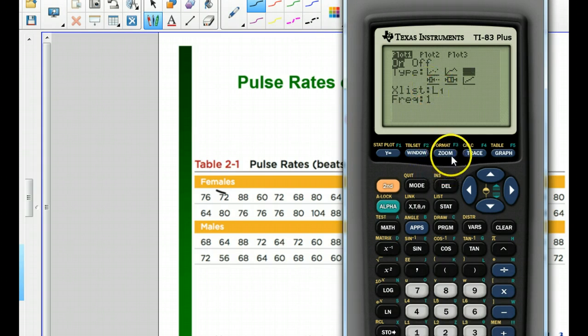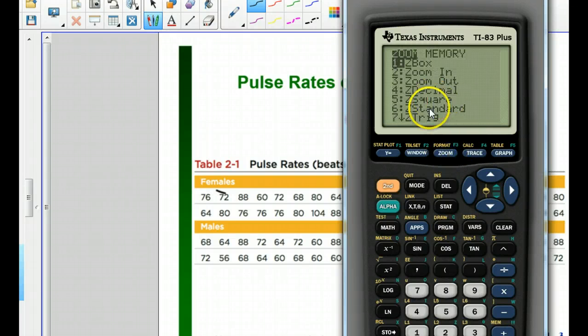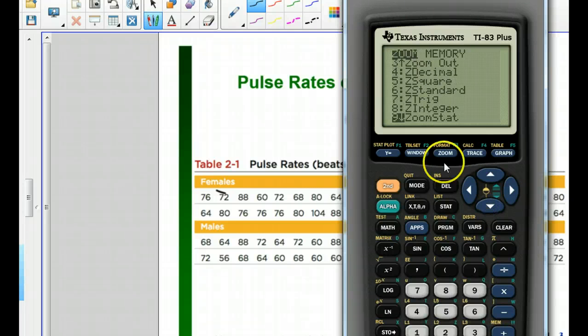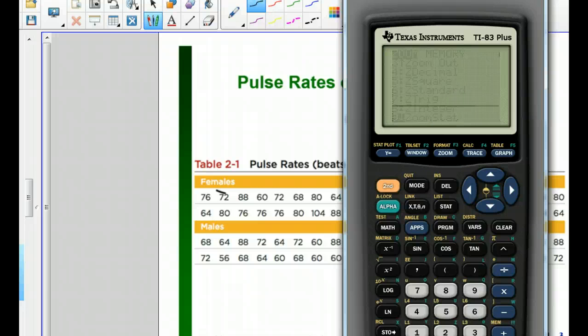Now once you have it in there, you're going to press the zoom button right here, zoom, and then if you scroll down, you can usually just press zoom nine. I'll scroll down to show you, zoom nine is zoom statistics. So hit zoom stat.